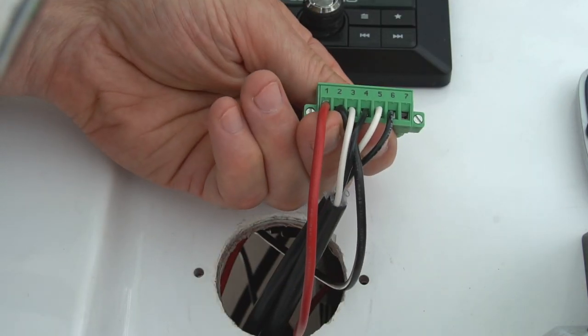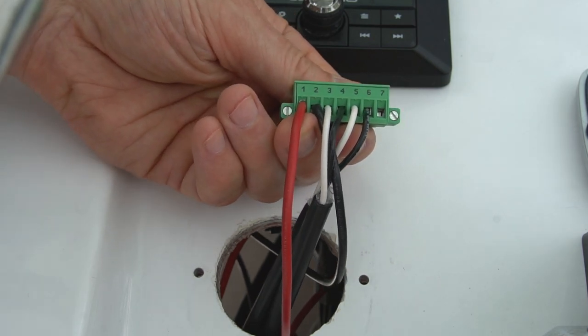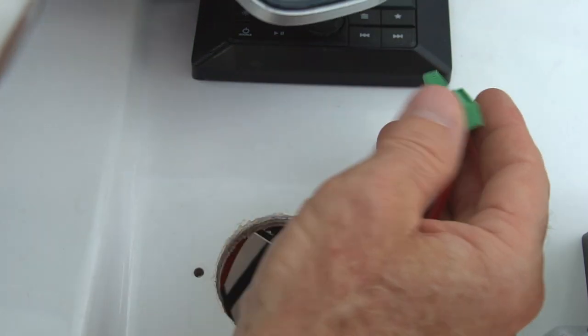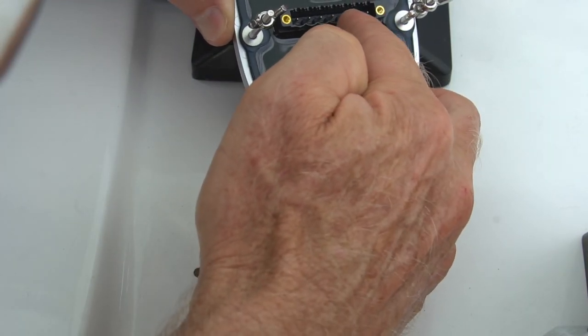Once you've checked to make sure all your wires are tight, get the ALC control. The terminal strip is polarized with a rounded surface on the bottom.